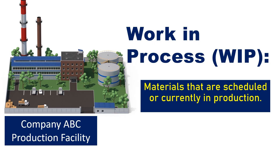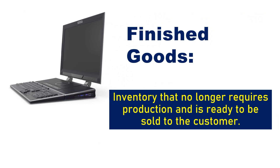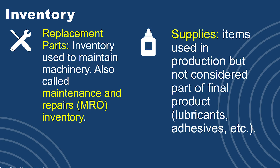Eventually your company finishes production and creates the next type of inventory: a finished good. These are the products that we buy out of stores. It becomes a finished good once it's completely done with production — so once a computer has been fully assembled and is ready to ship, it is considered a finished good. Those are the general types of inventories.